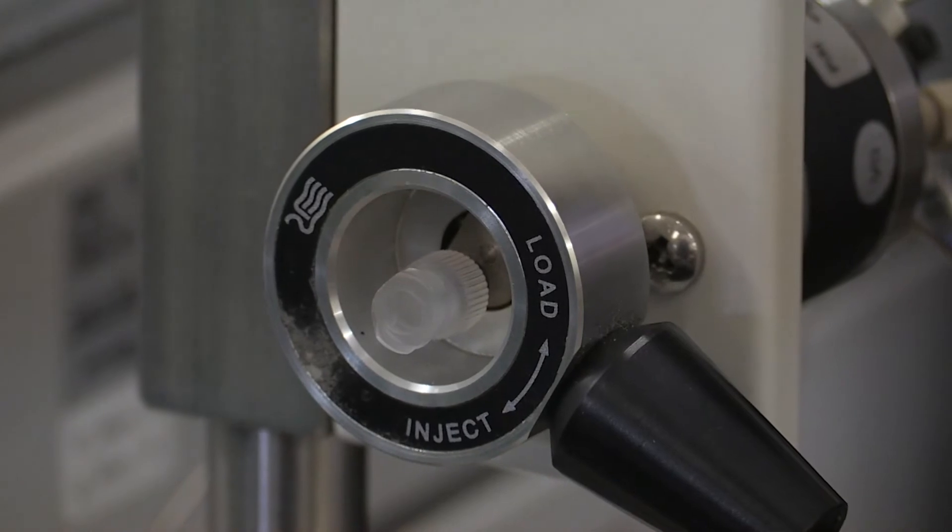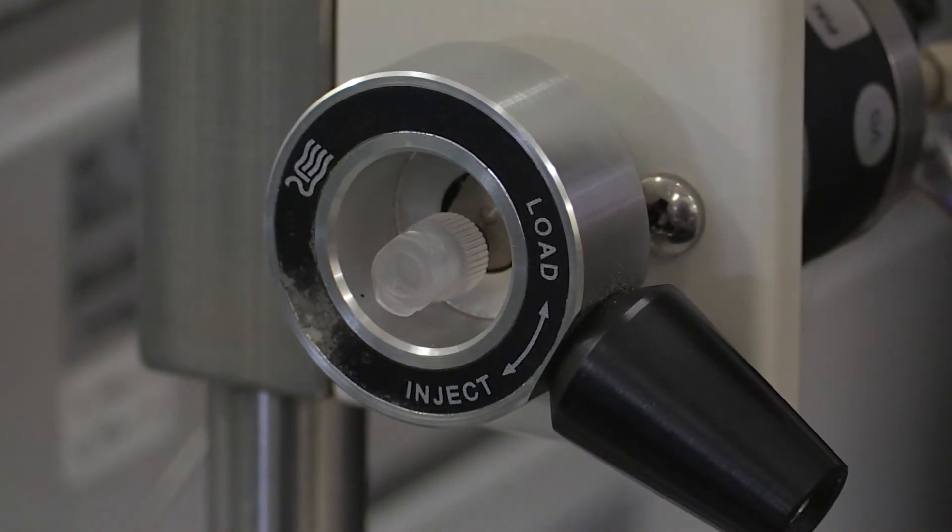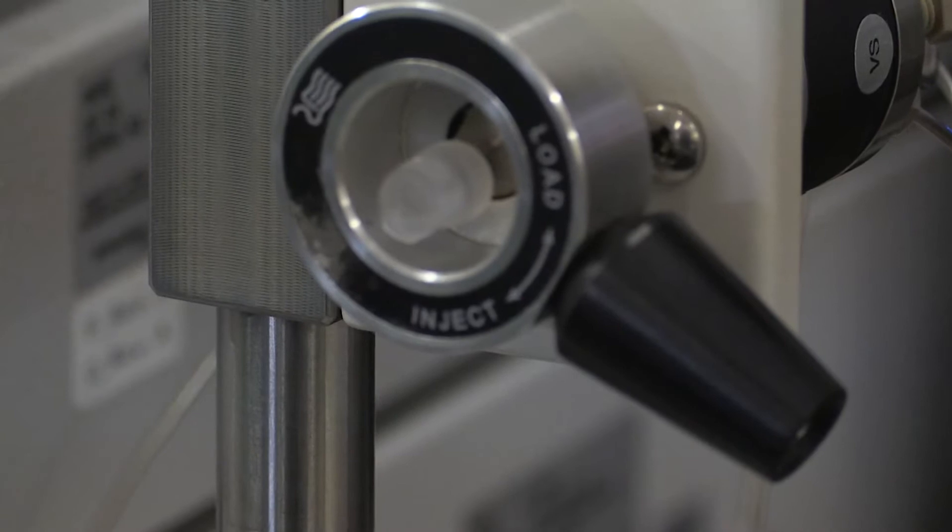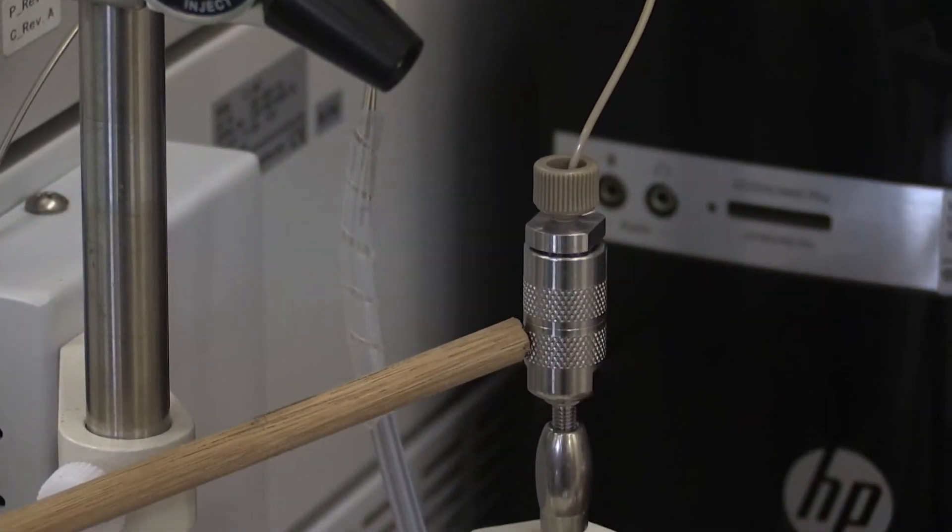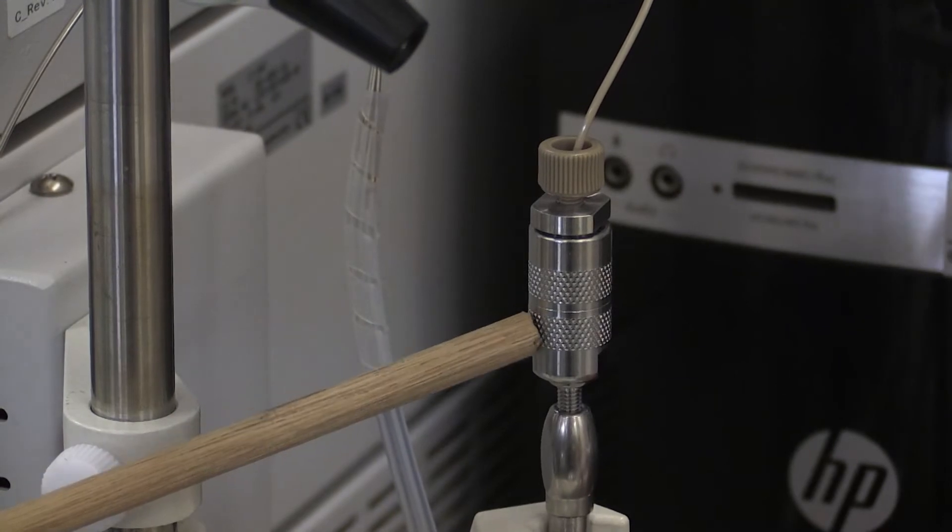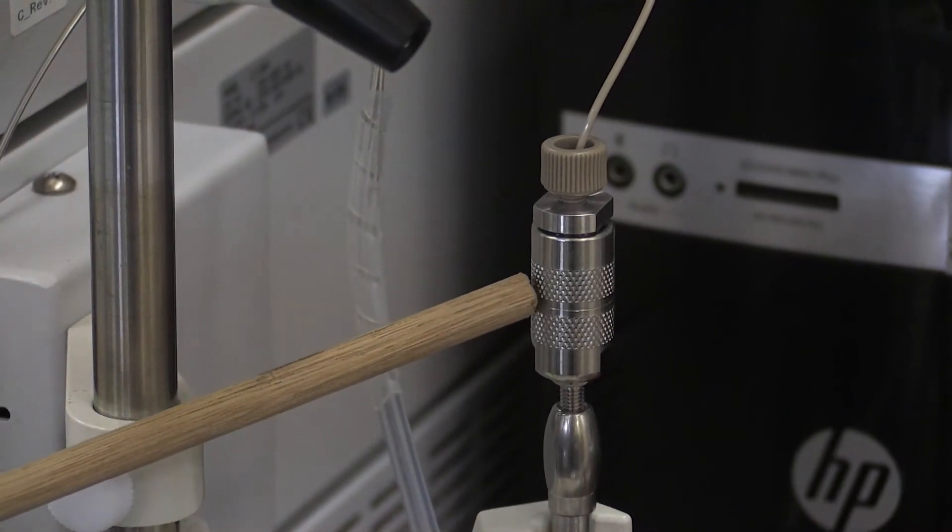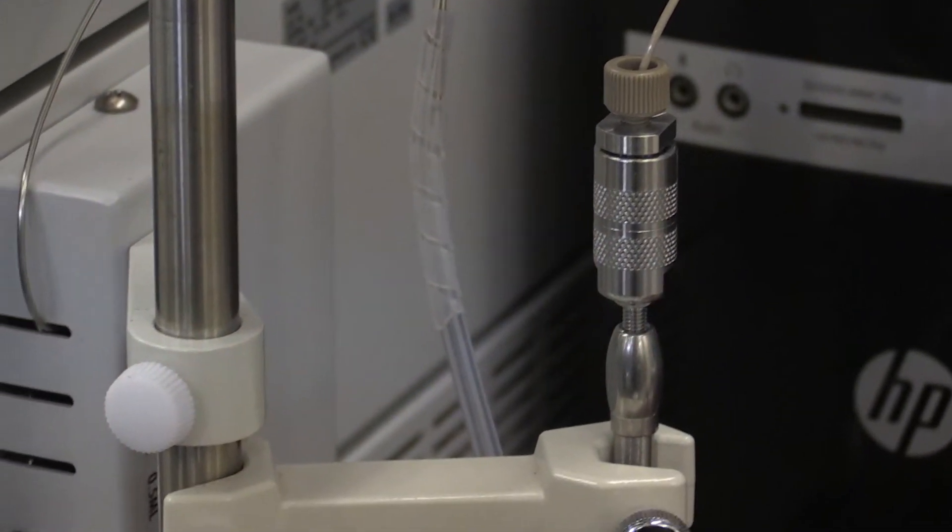Before your sample reaches the actual column, it passes through the guard column. The guard column is used to protect your column in case your sample contains harmful compounds that could block or clog your column. The separation occurs in the column.